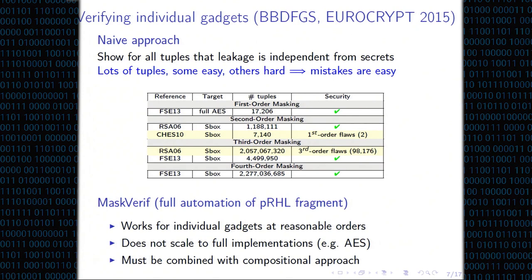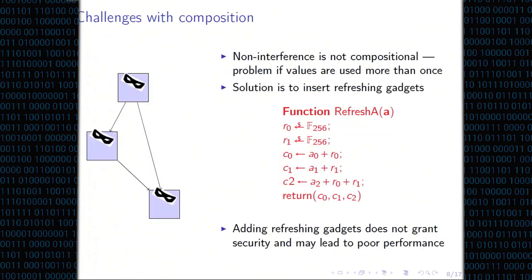You cannot take two probing-secure gadgets and simply combine them — the result is insecure. The problem comes from the fact that there are some values that can be used more than once. The standard solution to this problem is to use a so-called refreshing gadget: something that takes an encoding for some value and produces another encoding for the same value, introducing entropy and breaking probabilistic dependencies.